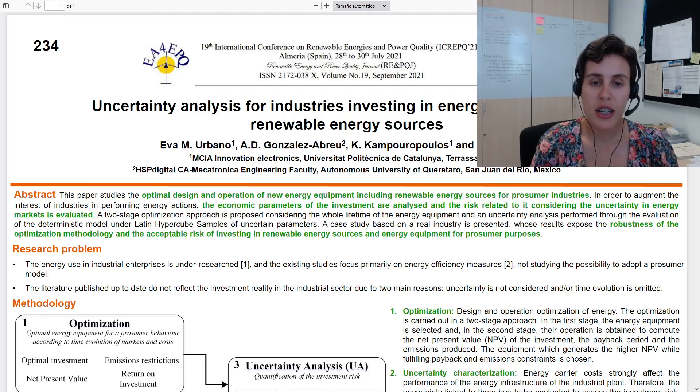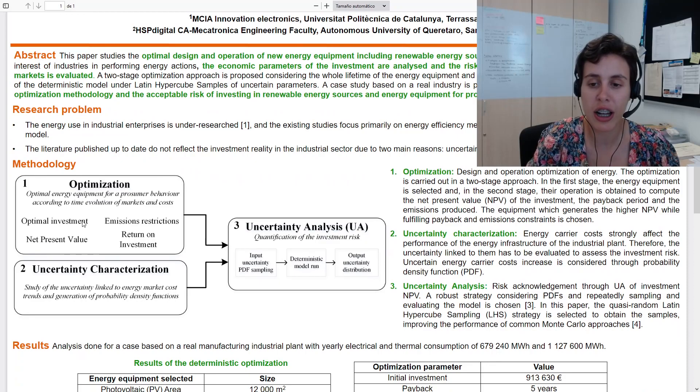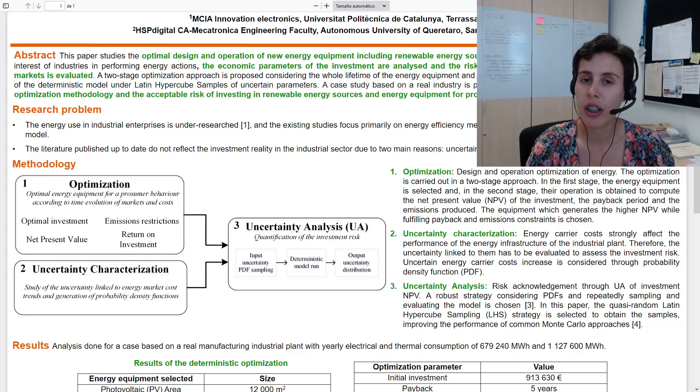In our research, this gap is fulfilled by proposing this methodological framework. First of all, what we do is optimize the energy equipment for the industrial SME. This optimization is carried out in a two-stage approach. The equipment is selected in the first stage, whereas the operation of the equipment is optimized in the second stage for its complete lifetime and considering a prosumer model.